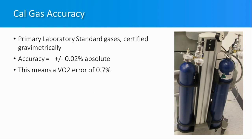Regarding calibration gas, the system is only as good as your ability to trace back to scientific standards. If you have a calibration gas with more than about 0.02% absolute error, you are starting to fall outside of acceptable limits, especially when working with athletes or in research contexts.